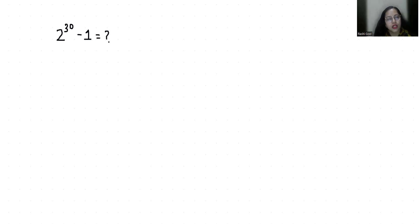So 2 power 30, I can write it as 2 power 20 plus 10 minus 1. Now it becomes 2 power 20 times 2 power 10 minus 1. Now 2 power 10 power 2, we can write this as 2 power 20 times 2 power 10 minus 1.